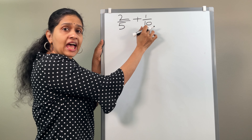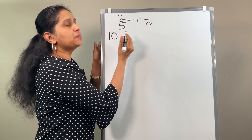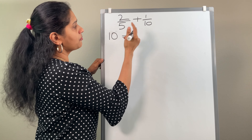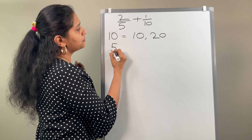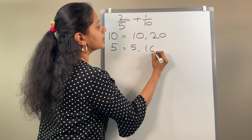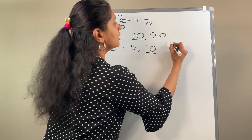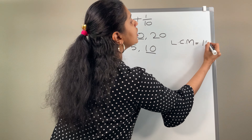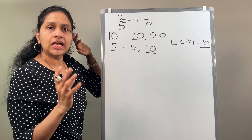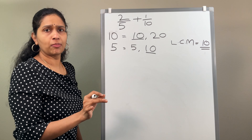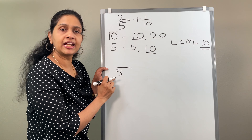Now let us see the second example: 2 by 5 plus 1 by 10. As I told you, step 1 is to find the LCM of the denominators. So we need the LCM of 5 and 10. Let us list the multiples of 10 first, since it is easier to start with the bigger number: 10 times 1 is 10. Now list the multiples of 5: 1 times 5 is 5, 2 times 5 is 10. We already found the first common number, so the LCM of 5 and 10 is equal to 10.